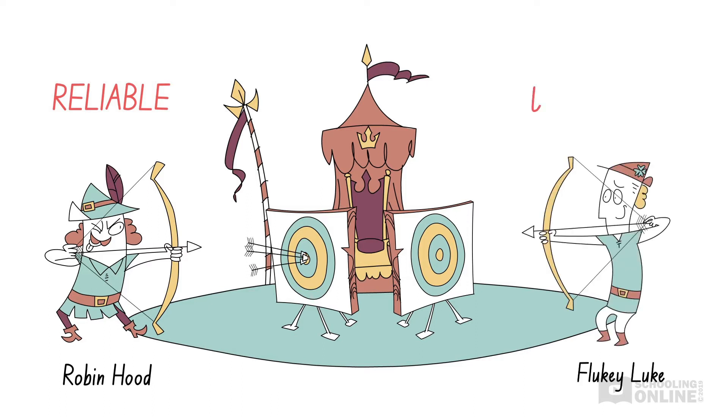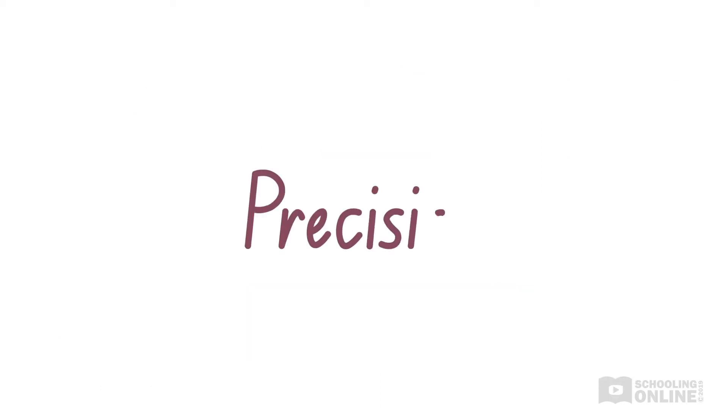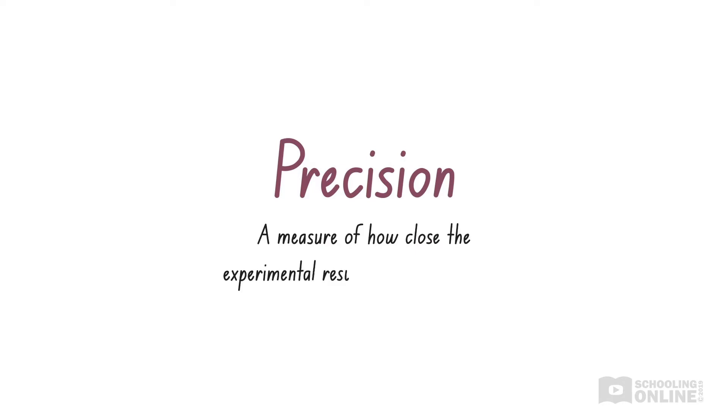Meanwhile, Fluky Luke is not a reliable archer since his arrows go all over the place. Another key term is precision, which is a measure of how close the experimental results are to each other. If the results of an experiment are precise, then the experimental method is reliable.